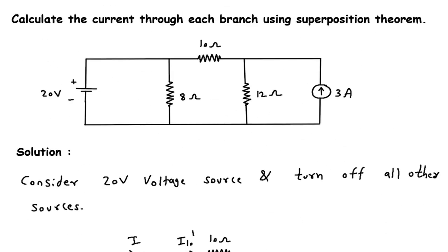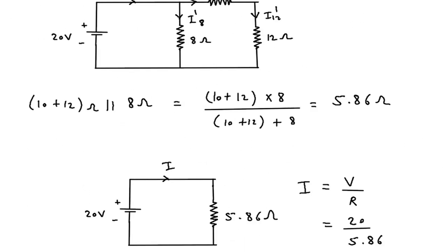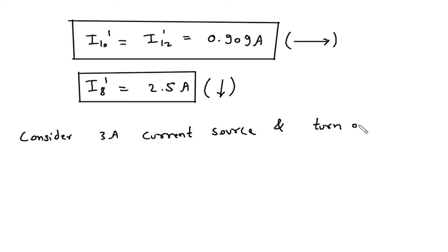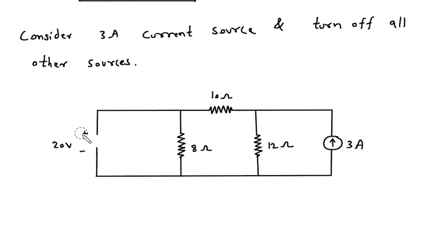Now we will consider the 3 ampere current source and turn off the voltage source. When we turn off the voltage source, it becomes a short circuit. As a result, the 8 ohm resistor is also short-circuited, so its value becomes 0 and we can remove it from the circuit.